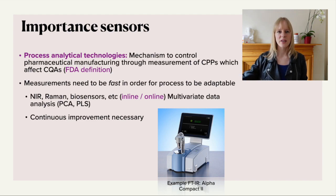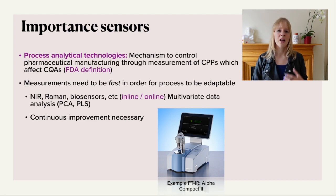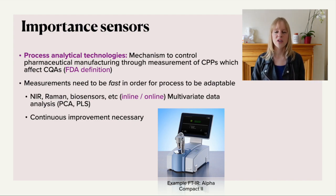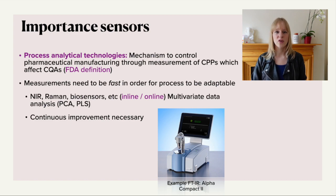So once you control it, you look at your measurement data, and in real time you can make adaptations to your process — such as changing the pH or changing the temperature — in order to make sure that your product quality isn't affected.